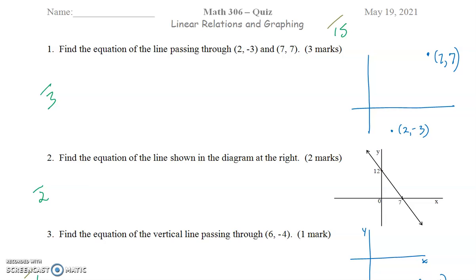Question 1 asks you to find the equation of the line passing through (2, -3) and (7, 7). Now, we've gone through the steps that are required for this. I'm going to show you an image afterward, but in the first step, you have to say,